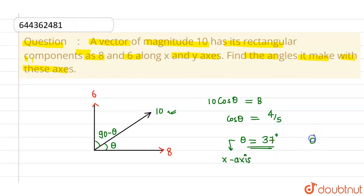Similarly, the angle made with the y-axis, which is nothing but 90 minus theta, will come out to be 53 degrees. So this is the angle with the y-axis.